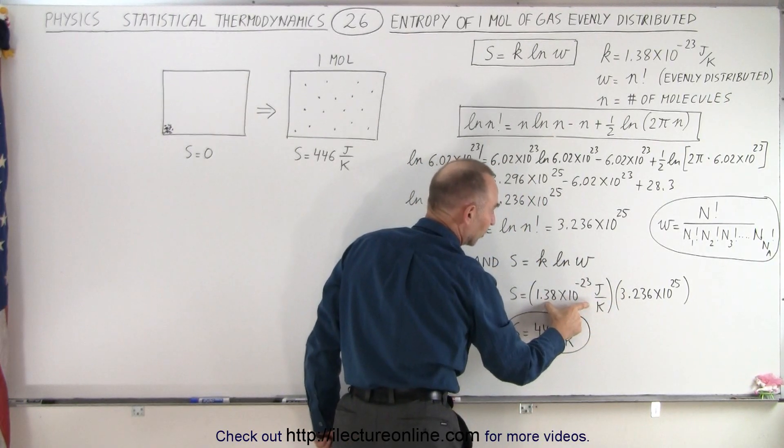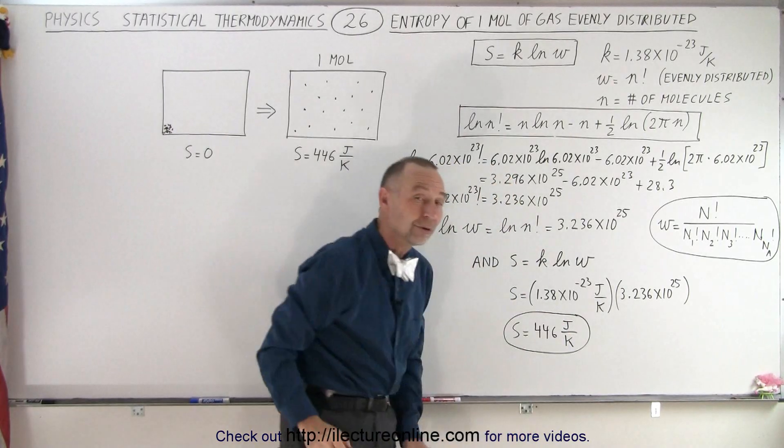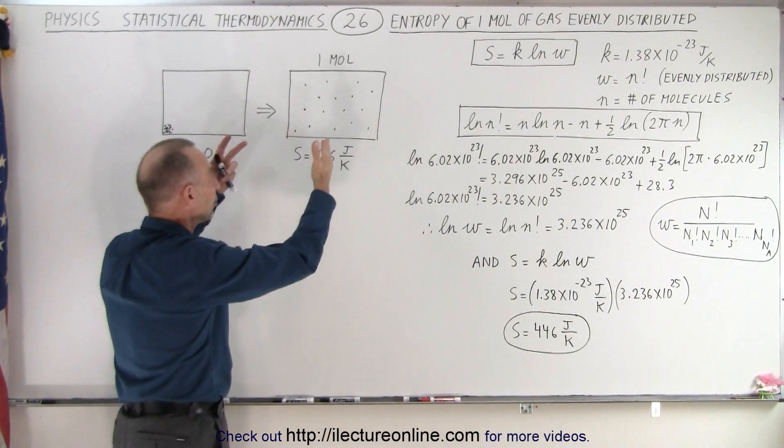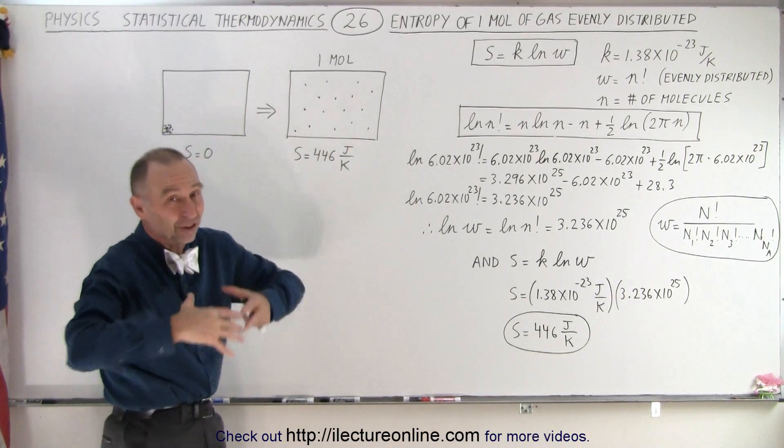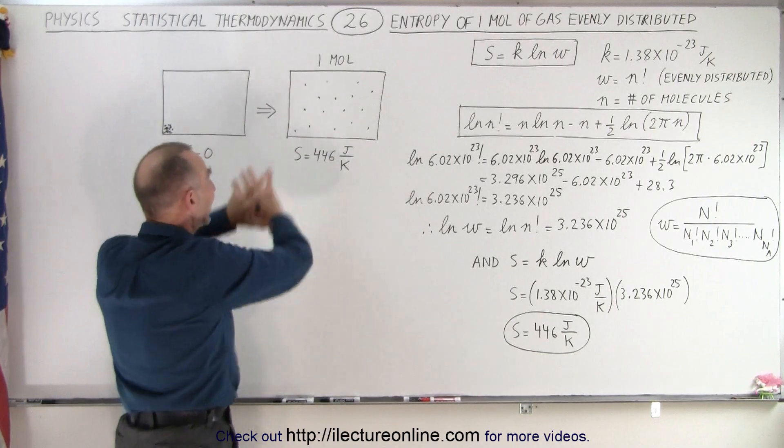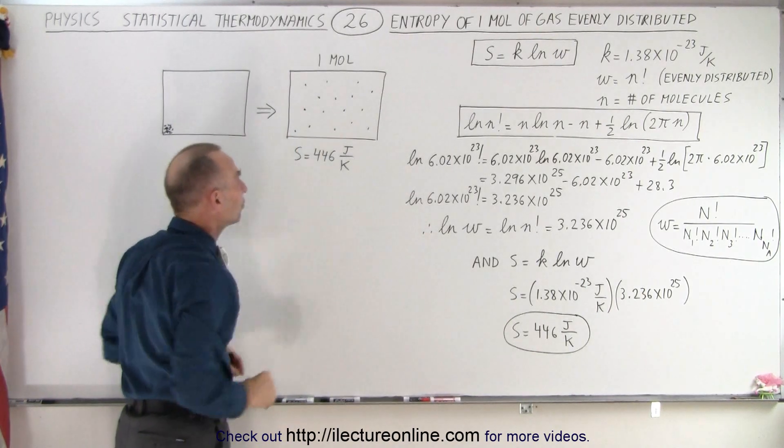Now, we multiply that times Boltzmann's constant, and that's where we get the 446 joules per Kelvin. So that is the statistical entropy, or the entropy of the statistical thermodynamics of the situation where we have that many molecules evenly distributed throughout the container.